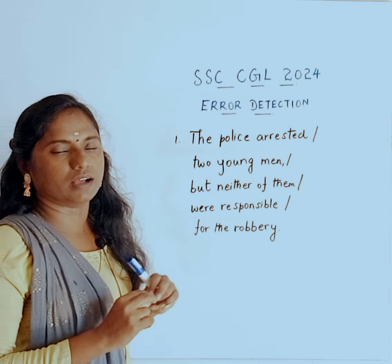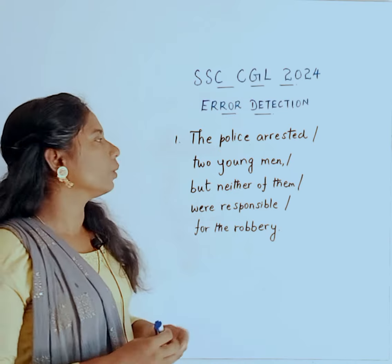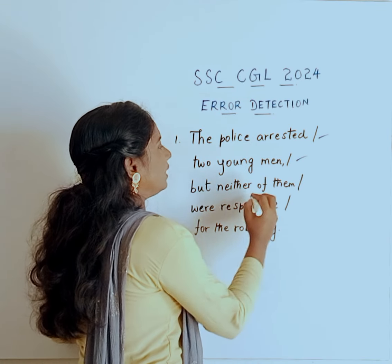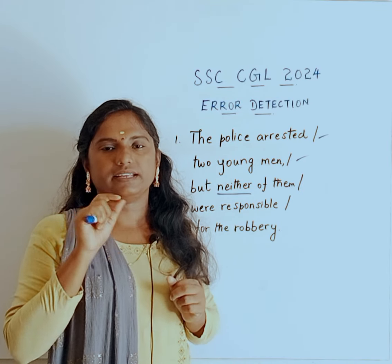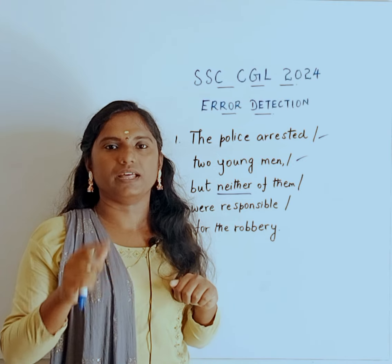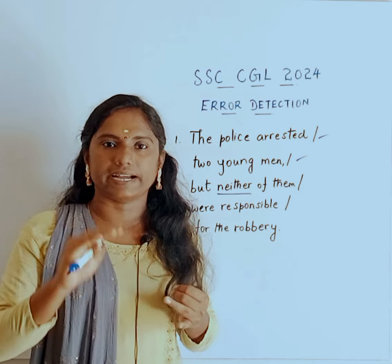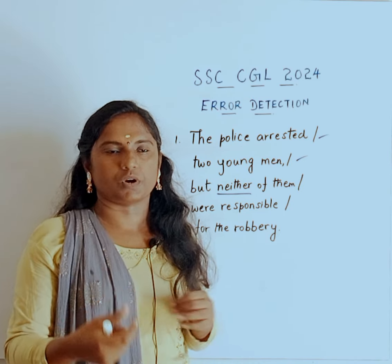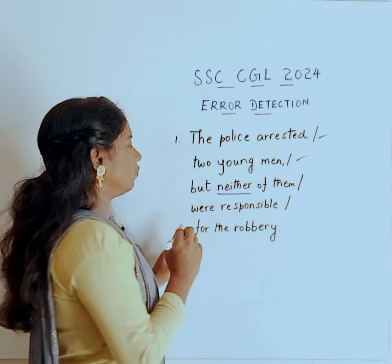Police arrested two young men, but they are not responsible for the robbery. The police arrested two young men, but neither of them — neither of them were responsible for the robbery — both are not possible. But either of them were responsible for the robbery is also wrong. So, neither of them were responsible for the robbery.